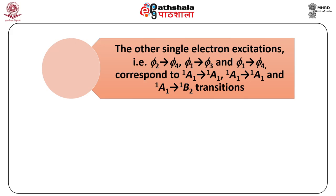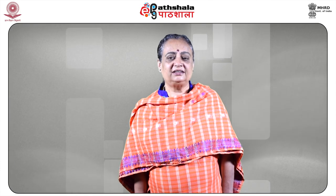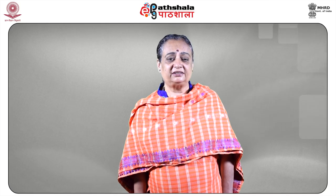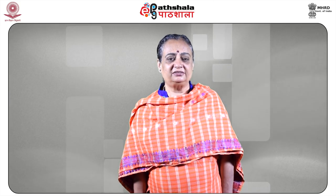Considering the other single electron excitations ψ2→ψ4, ψ1→ψ3, and ψ1→ψ4, they correspond to ¹A1→¹A1, ¹A1→¹A1, and ¹A1→¹B2 transitions. They are all allowed, and all single electron transitions are permitted by the electric dipole selection rules for cis-butadiene, because there is no centre of symmetry and so no Laporte selection rule, unlike trans-butadiene where some transitions were forbidden.